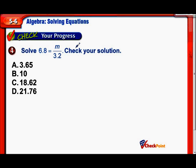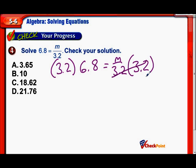A tougher one with decimals. 6.8 equals m over 3.2. We're dividing by 3.2. So the opposite of that would be to multiply by 3.2. Now that that's set up, these two cancel out. Times 3.2 divided by 3.2, they equal 1. So I'm left with just my variable of m on the right-hand side.